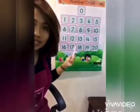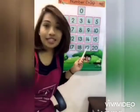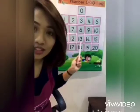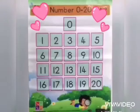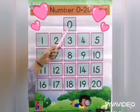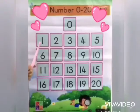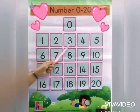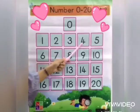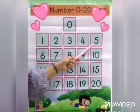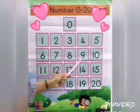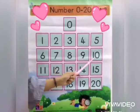What is this, children? This is the number chart. Okay, let's do the counting together. Zero, one, two, three, four, five, six, seven, eight, nine, ten.